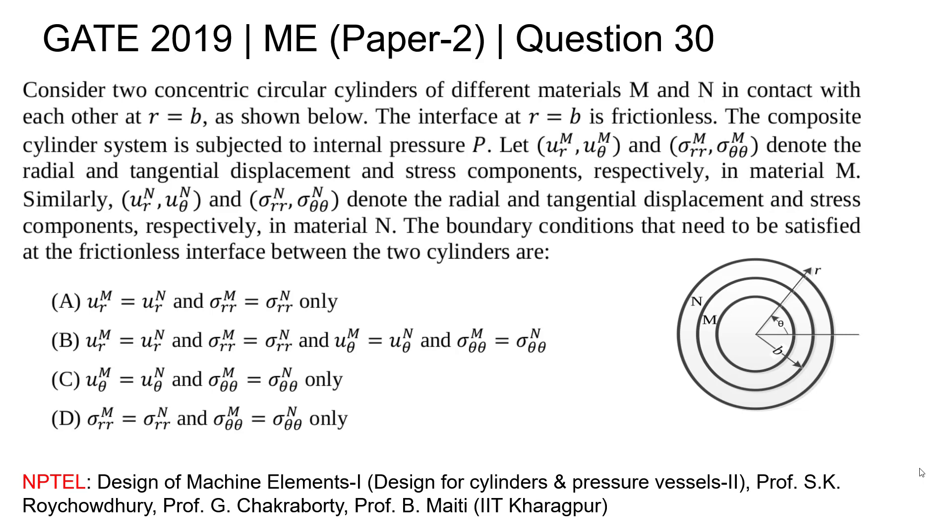Hello all, today we're going to see question number 30 from GATE 2019 Mechanical Paper-2. Consider two concentric circular cylinders of different materials M and N in contact with each other at r equals b as shown below. You are given these compound cylinders, and the system is subjected to internal pressure P.